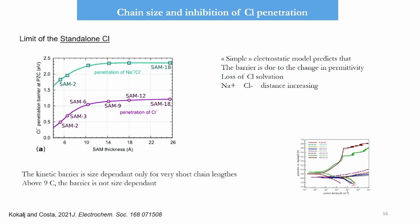This result can be linked to the fact that when you increase chain size, even if you already have 100% surface coverage, you have a better inhibition power because the barrier to chloride penetration is higher.